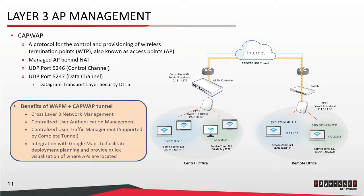So far, we have mentioned the CAPWAP protocol a few times, so let's talk more about this protocol. CAPWAP is a protocol for the control and provisioning of access points. In the CAPWAP protocol, a control channel is established using UDP port 5246, and a data channel is established using UDP port 5247. Therefore, when CAPWAP is enabled, make sure that these UDP ports are accessible at all deployment sites. Through these CAPWAP tunnels over UDP, you can have an EWS controller at a central location managing APs that are located at separate remote locations, despite the physical distance between them and despite the fact that these APs may be behind NAT. Google Maps can also be integrated to facilitate deployment planning and to provide quick visualization of where the APs are located.